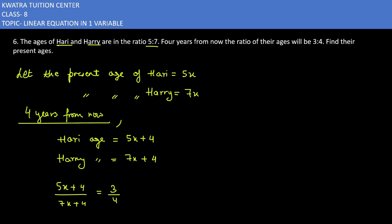Now, we have left to write 4 and right to write 7x plus 4. So 4 will be multiplied with 5x plus 4, and 7x plus 4 will be multiplied with 3. So 5x plus 4 is multiplied with 4, and 3 will be multiplied with 7x plus 4, because both have a numerator and denominator present.